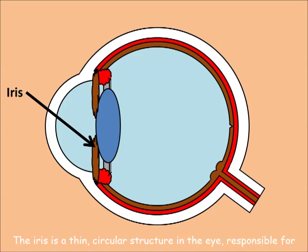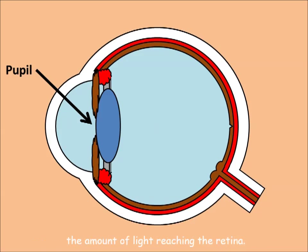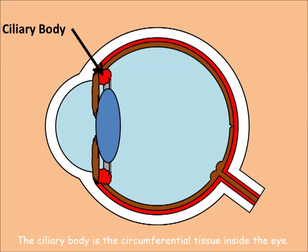The iris is a thin, circular structure in the eye, responsible for controlling the diameter and size of the pupil and thus the amount of light reaching the retina.